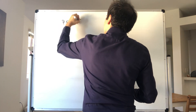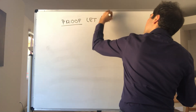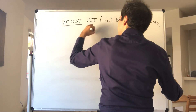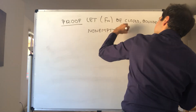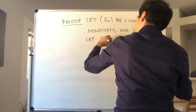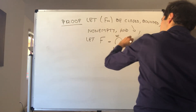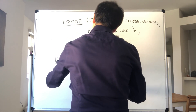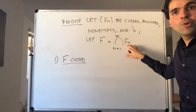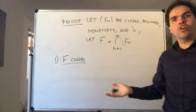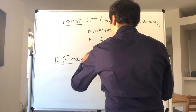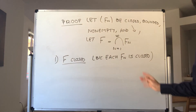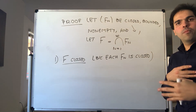Proof. Let fn be closed, bounded, non-empty, and decreasing, and let f be the intersection. First of all, f has to be closed — closedness is not a problem — and that's because each of the fn's is closed. If you remember, the intersection of any number of closed sets is still a closed set, because each fn is closed. It just follows because the union of any number of open sets is open, and the complement of an open set is closed.